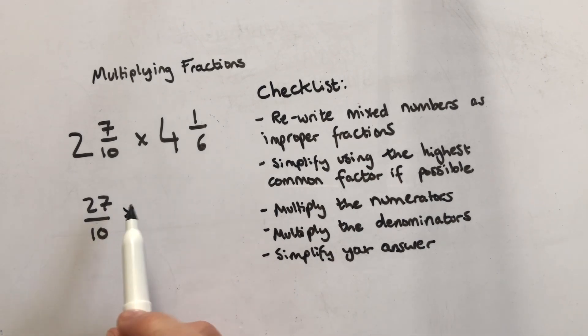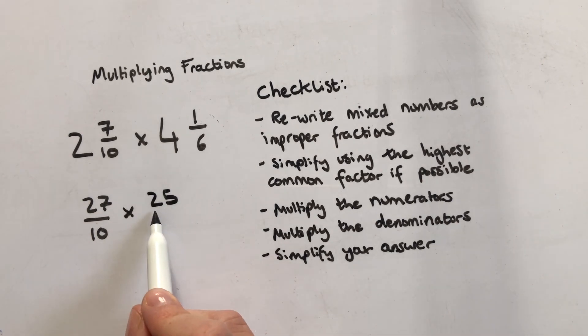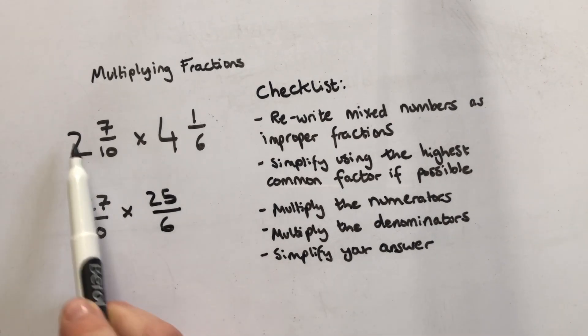Four times six is twenty four, plus that last one is twenty five. So it's twenty five sixths. All I've done is taken those whole numbers and put them into improper fractions.